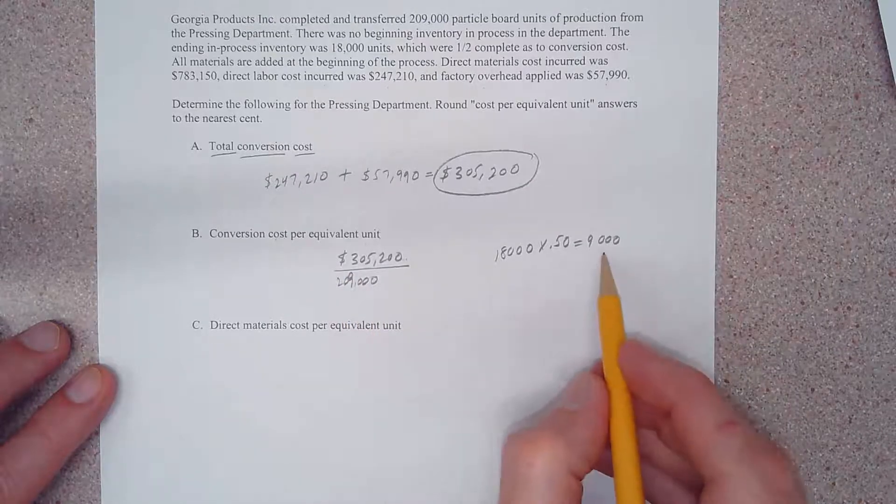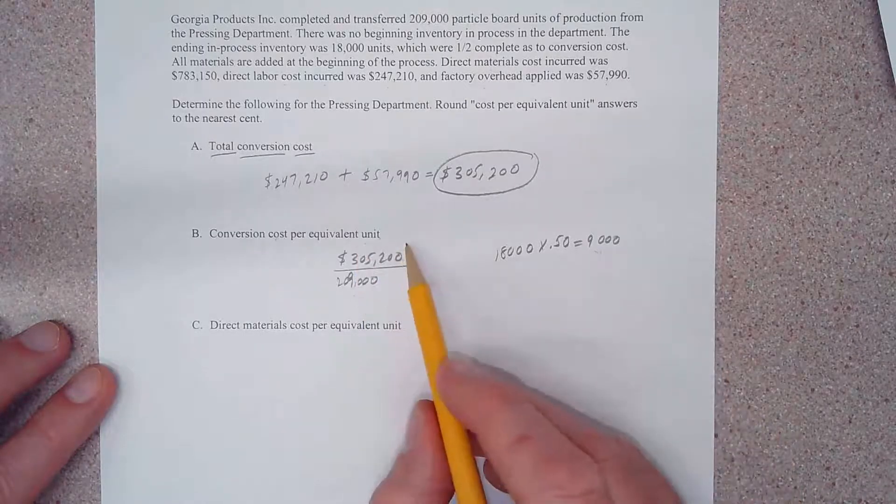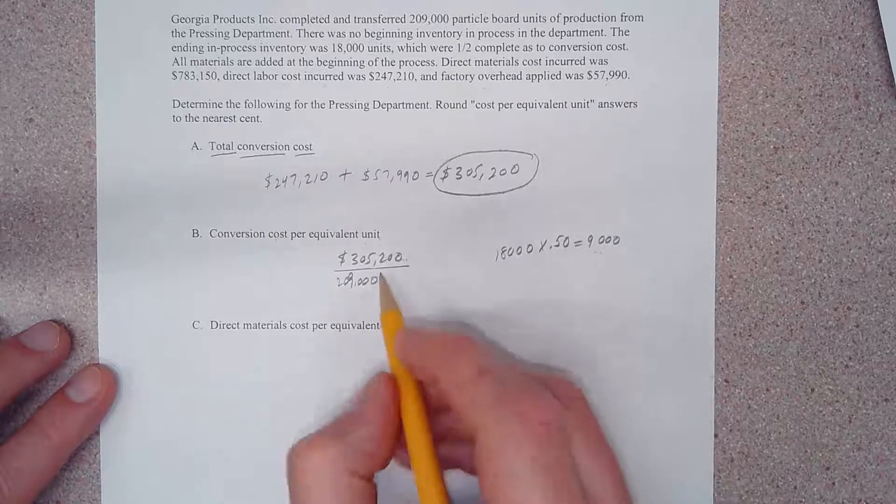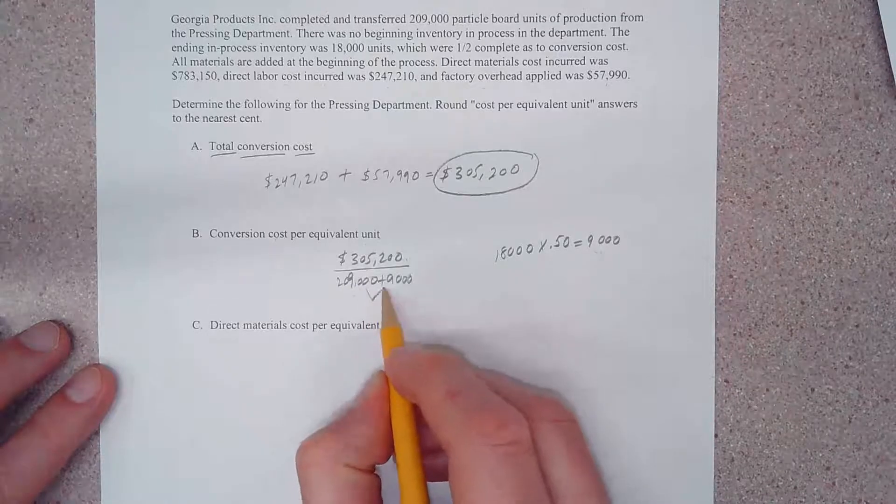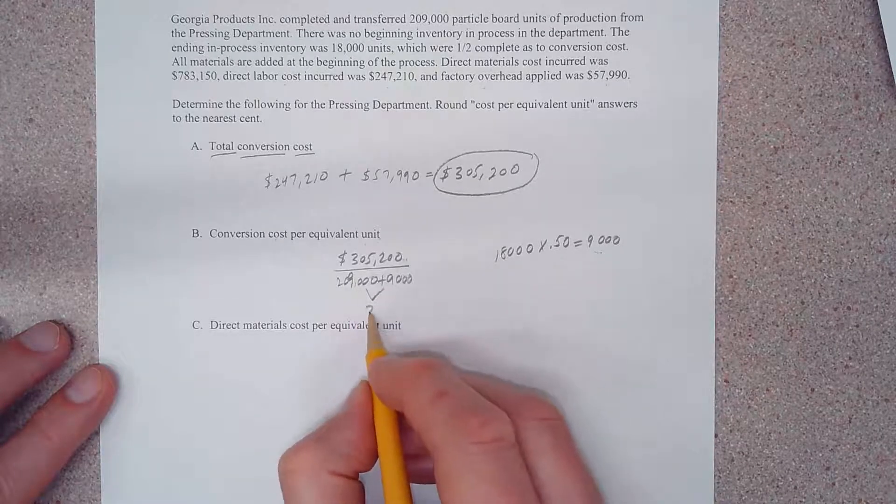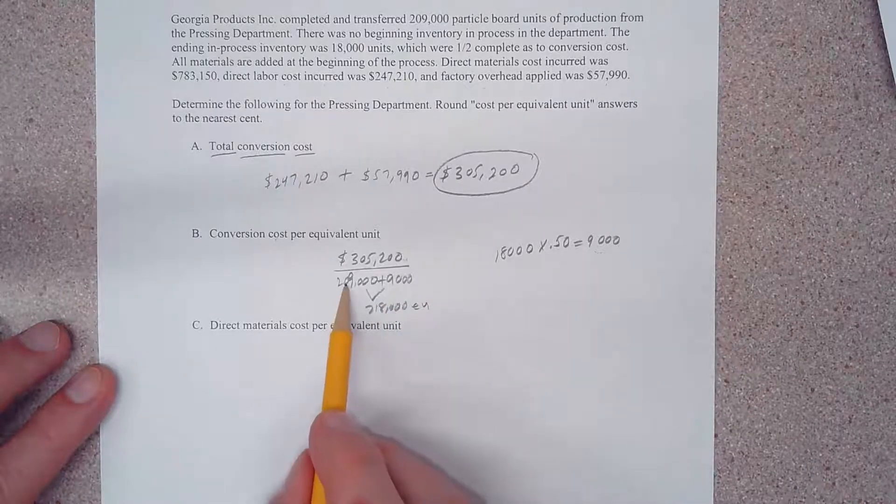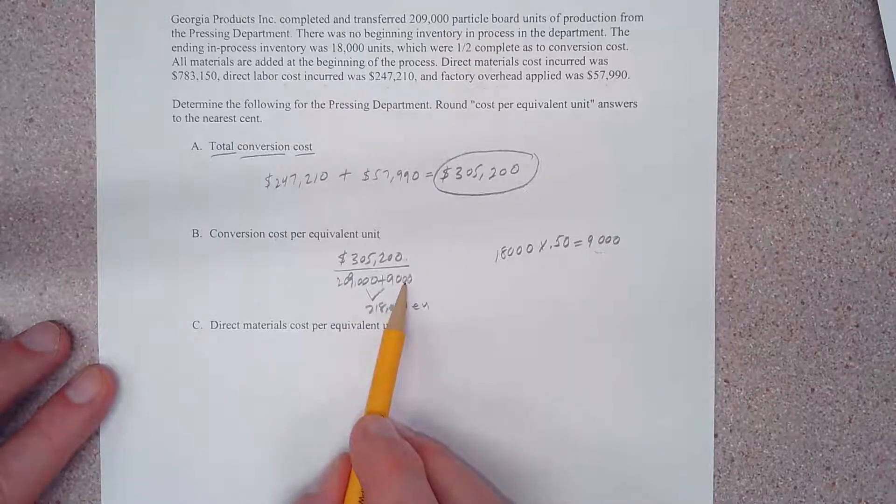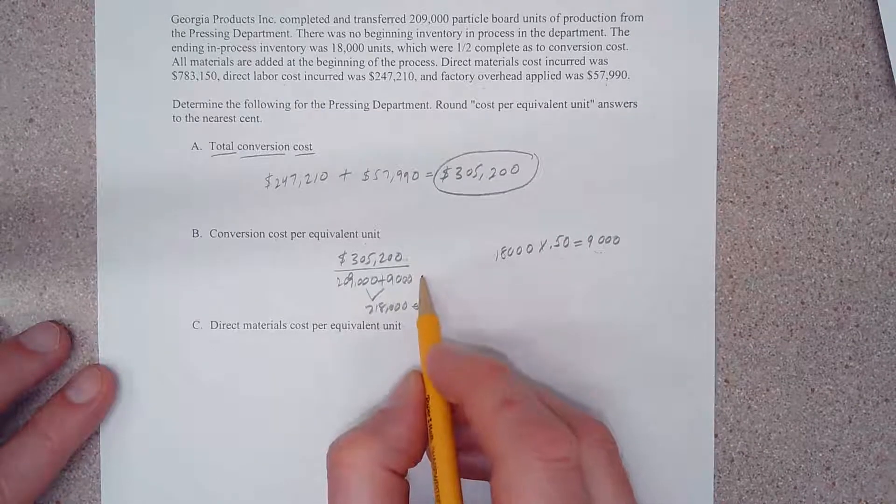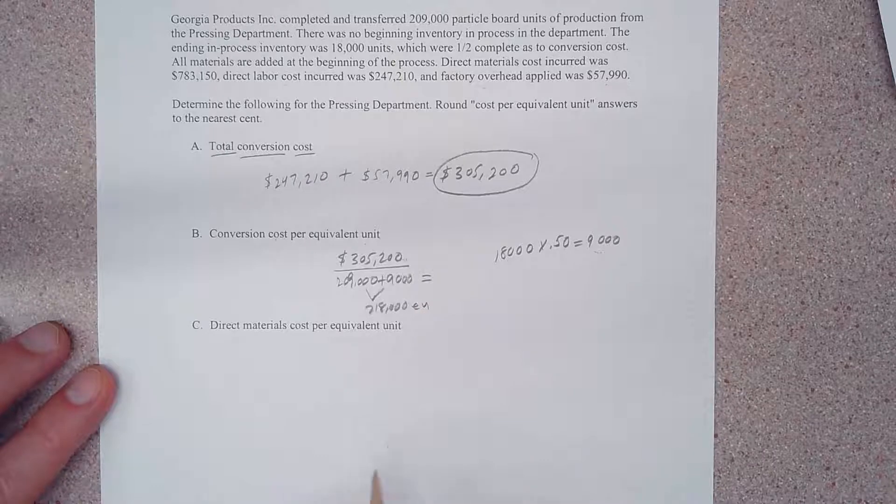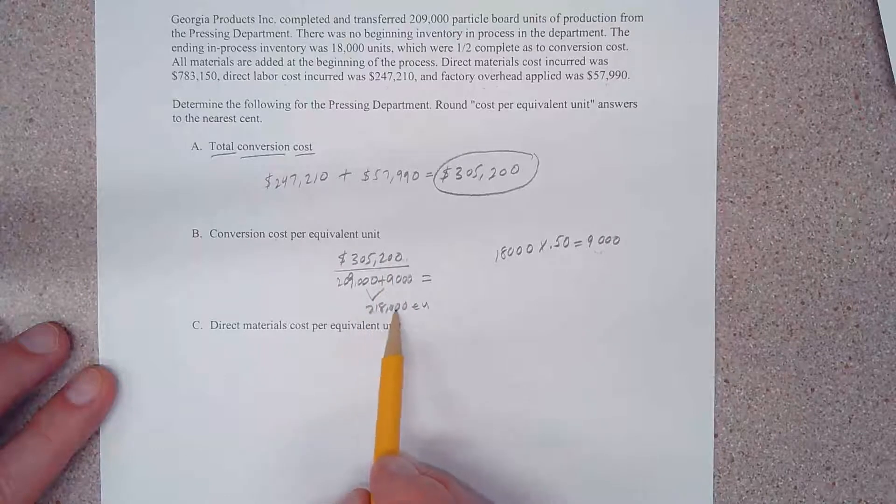So our true denominator is not 209,000 but 218,000 equivalent units. Again, 209 are all the way there and 18,000, or 50 percent of the way. Okay, all right, so now all we do is do a little bit of division. And if we take $305,200 and we divide that by 218,000 equivalent units, we come up with a conversion cost of $1.40.